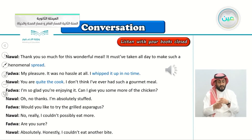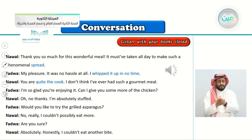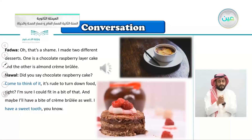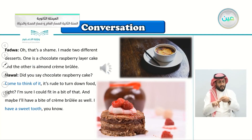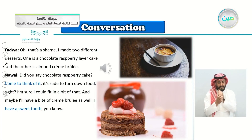Fadwa: Would you like to try the grilled asparagus? Nawal: No, really. I couldn't possibly eat more. Fadwa: Are you sure? Nawal: Absolutely, honestly. I couldn't eat another bite. Fadwa: Oh, that's a shame. I made two different desserts — one is a chocolate raspberry cake and the other is almond crème brûlée. Nawal: Did you say chocolate raspberry cake? Come to think of it, it's rude to turn down food, right? I'm sure I could fit in a bit of that, and maybe I'll have a bite of crème brûlée as well. I have a sweet tooth, you know.